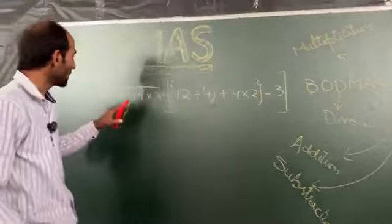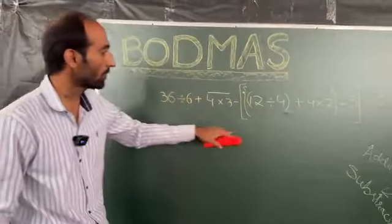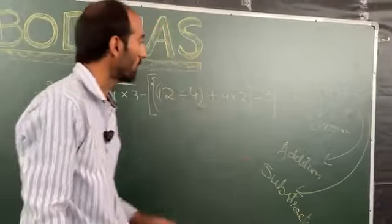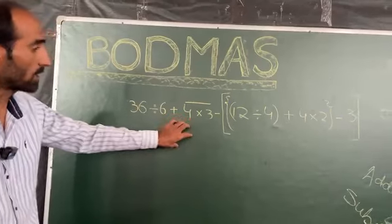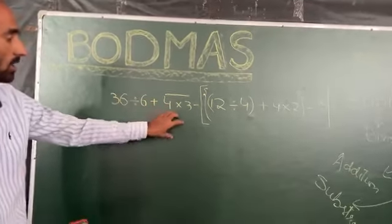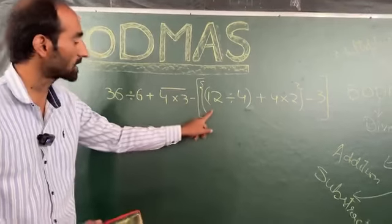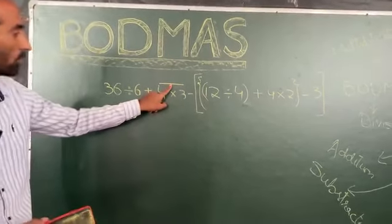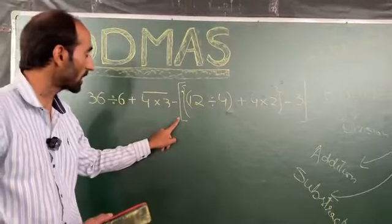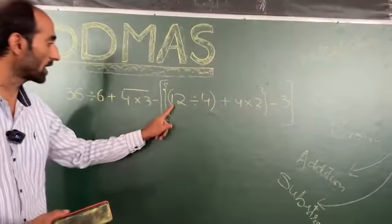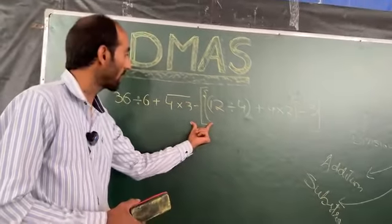So when we go through this question, first we have to think about the brackets which I have already mentioned. In this question we have to see the four brackets — every type is present here: the vinculum bar is here, the long bracket is here, the middle bracket is here, and the short bracket is here.